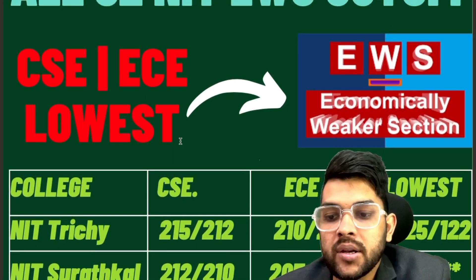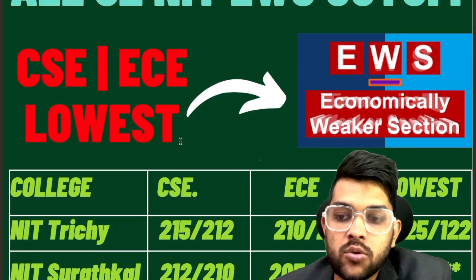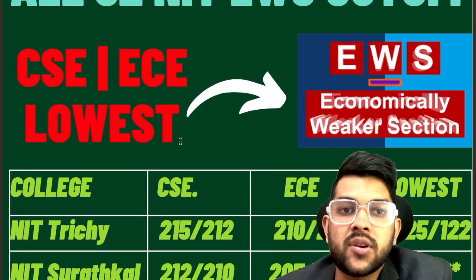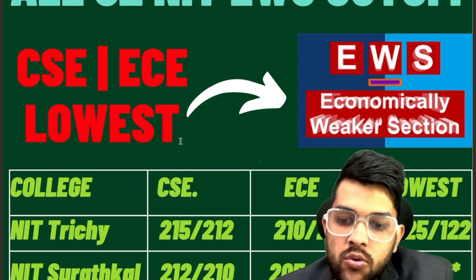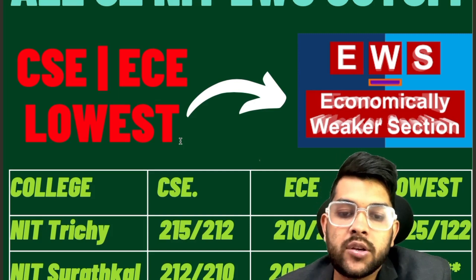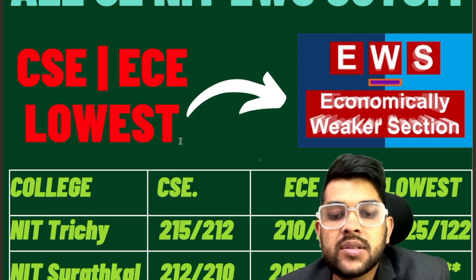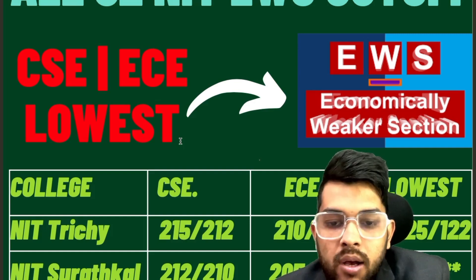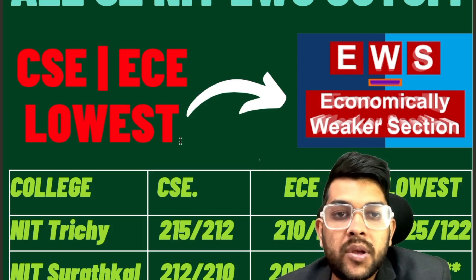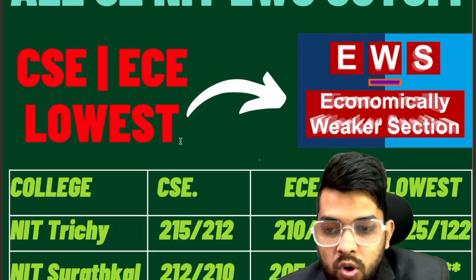For NIT Trichy, you need 215 and 212 marks for CSE — male and female respectively, after the slash it is for female students. For EC it is 210 and 205. The lowest marks are 125 and 122, meaning for any branch in NIT Trichy you need to score at least 125 for male and 122 for female.